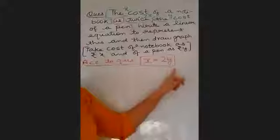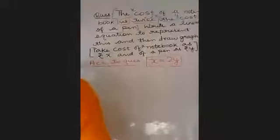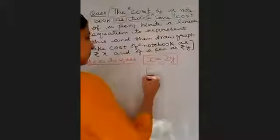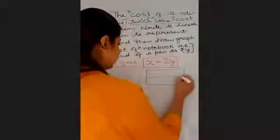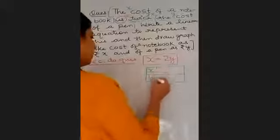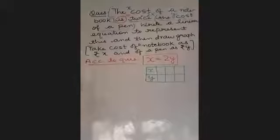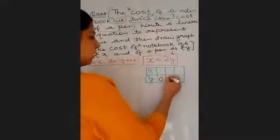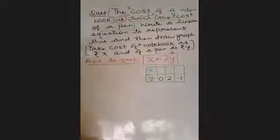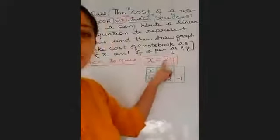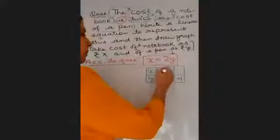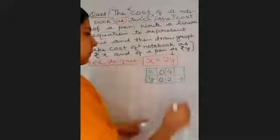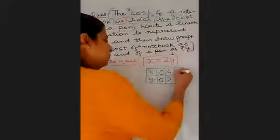According to the question, x is equal to 2y. Now the next step is to find the values in the table. Minimum three values we are going to take. Let us put the values of y: zero, two, minus one. If y is zero, 2 into 0 is zero. If y is two, 2 into 2 is four. If y is minus one, minus one into two is minus two.